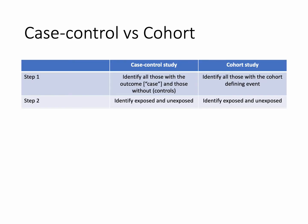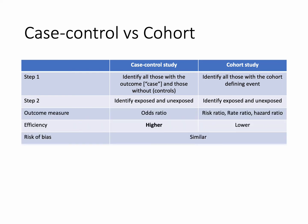Here's a comparison table. With a case control study, step one is identifying all those with the outcome (cases) and without (controls). In a cohort study, step one is identifying all those with the cohort-defining event — for example, they all had diabetes. Step two in both is identifying who was exposed and who was unexposed. A case control study can only calculate an odds ratio, whereas a cohort study can calculate a risk ratio, rate ratio, or hazard ratio.